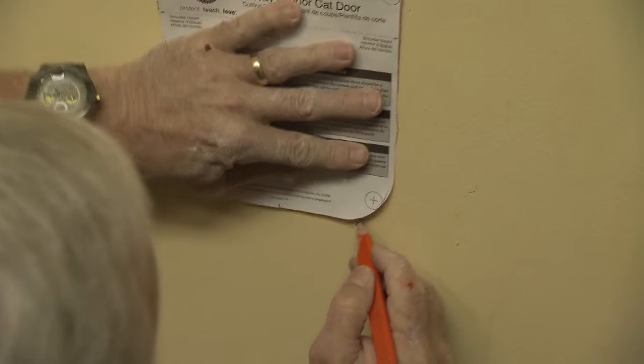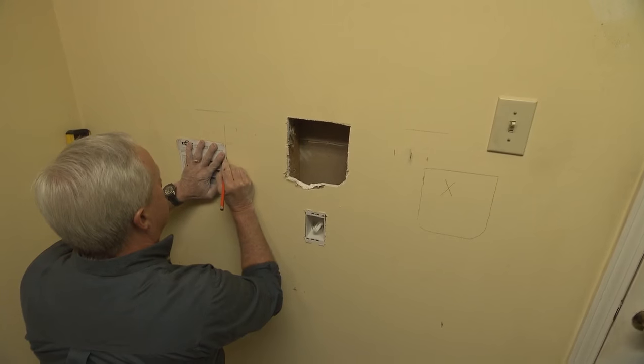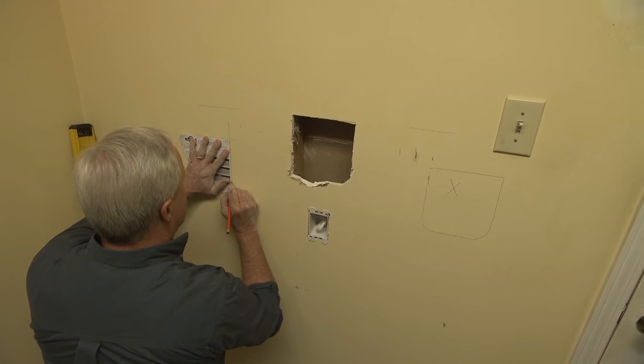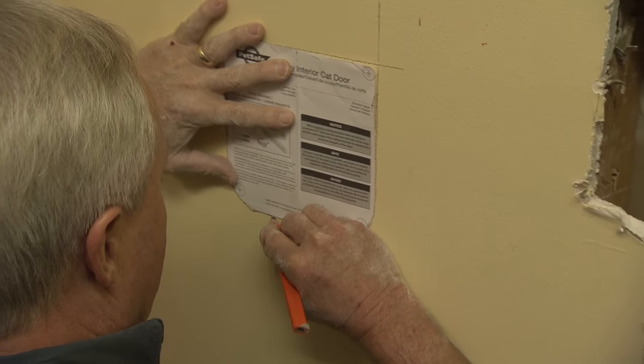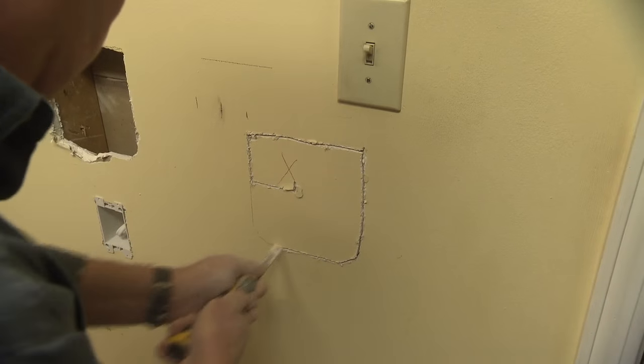Next, lay out the location of the chutes on the inside, being careful to avoid the studs. We're using pet doors to cover the chutes so they can be used to mark the size of the holes that will be cut in the drywall.